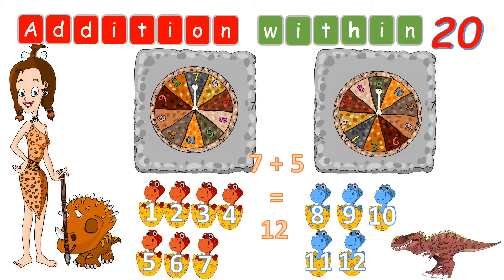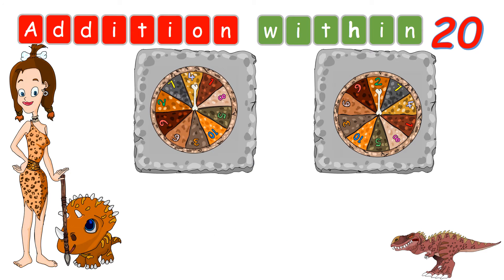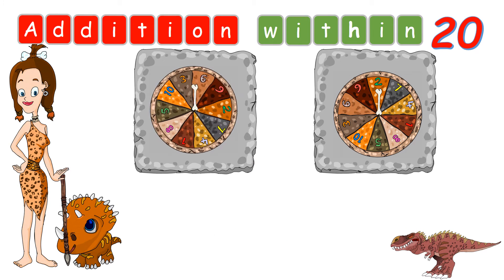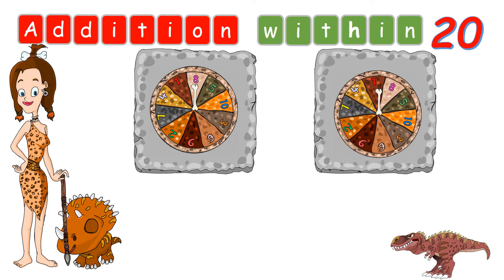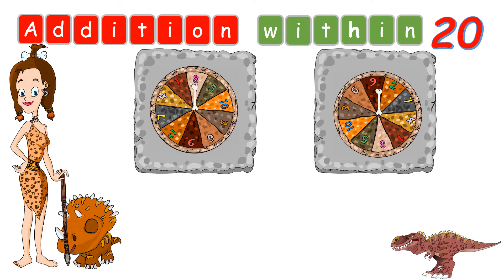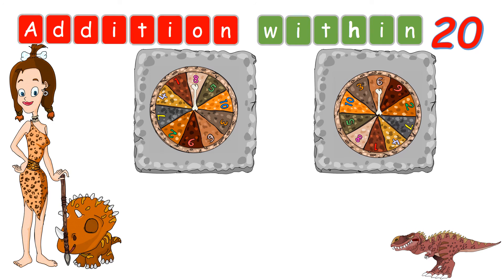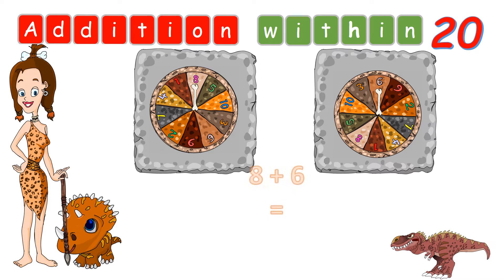We'll do another addition, shall we? The first number now is 8. Let's spin the second wheel. The second number is 6. So we have the first number as 8 and the second number is 6. So what does 8 plus 6 equal to?